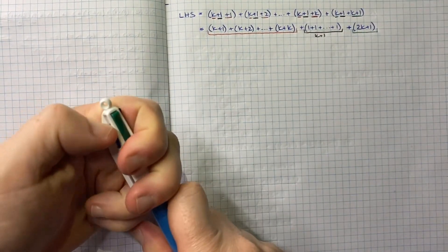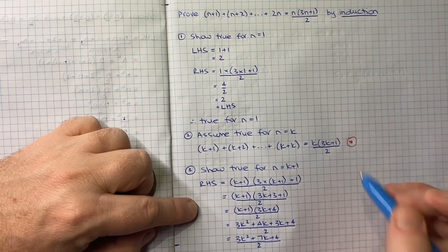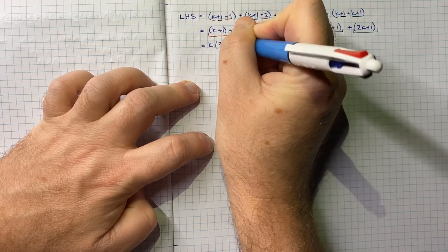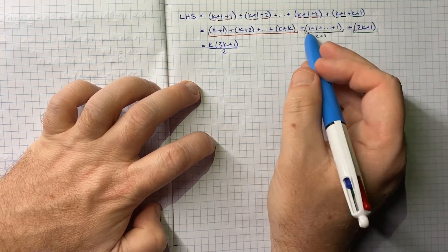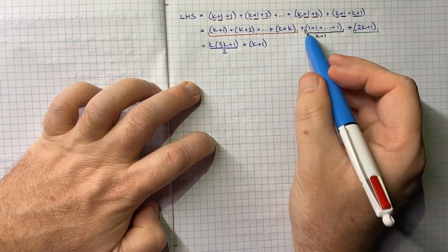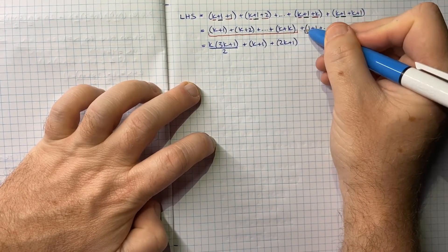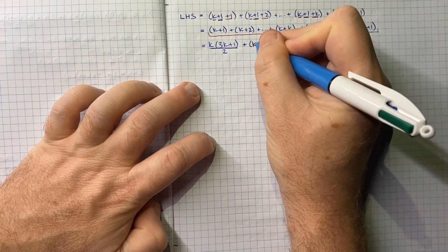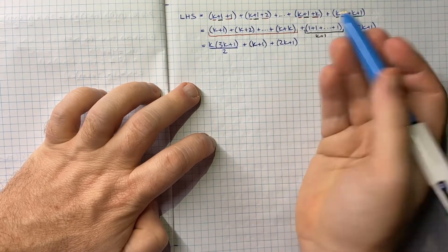Bringing it all together: the red portion, (k+1) + (k+2) + ... + (k+k), equals k(3k+1)/2 by the step 2 assumption — that's the essence of induction, linking step 3 back to step 2. Then we have 1 added k+1 times, which is just k+1. And finally the leftover 2k+1. Adding 1 a total of k+1 times gives k+1, just as adding 1 three times gives 3.